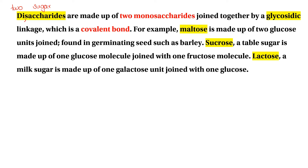For example, maltose is a glucose — or two glucose units form a disaccharide. If you want to add more glucose molecules, you can add sugar.